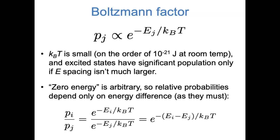Remember that our absolute definition of energy is arbitrary — it's really only differences in energy that are meaningful. That means the relative probabilities of two states being occupied must depend only on the difference in energy, and we can show that. The ratio of the probabilities of two states being occupied, Pi divided by Pj, can be written as a quotient of Boltzmann factors. Using exponent rules, dividing one exponential by another means we subtract the two exponents, and we can see that the quotient of those two probabilities depends only on the difference between the energies — as it had to be, because our definition of zero energy was arbitrary.